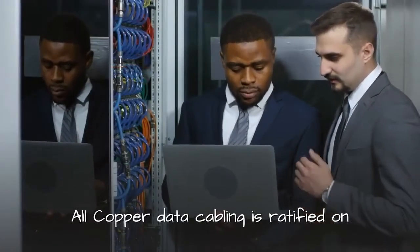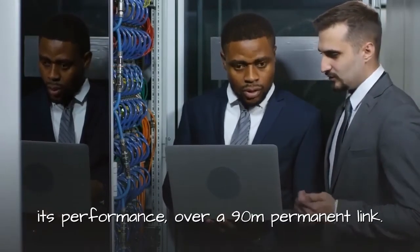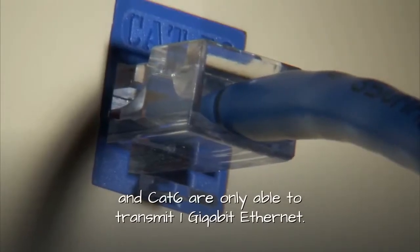All copper data cabling is ratified on its performance over a 90 meter permanent link. For this reason, over 90 meters both CAT5e and CAT6 are only able to transmit 1 Gigabit Ethernet.